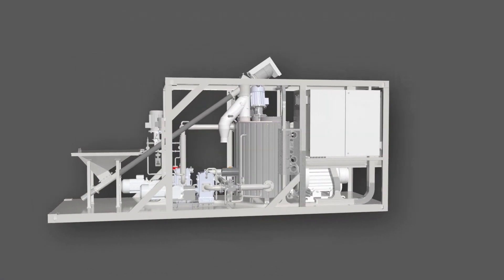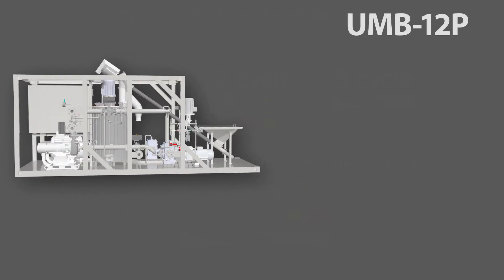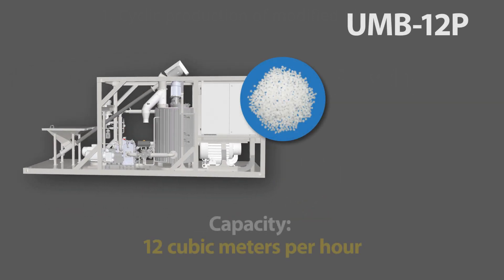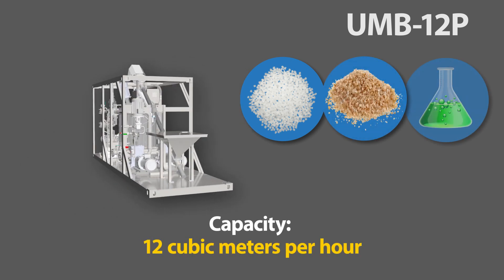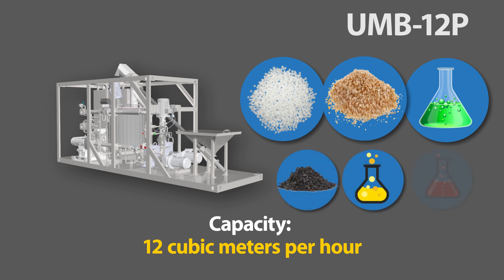In this video we will look at new continuous equipment using the UMB-12P unit as an example. The plant modifies bitumen with any polymer additives in the form of powder, granules, or liquid at the rate of 12 cubic meters per hour. The GlobeCore modification technology implemented in the UMB also allows the use of crumb rubber, sulfur, or polyphosphoric acid as additives.